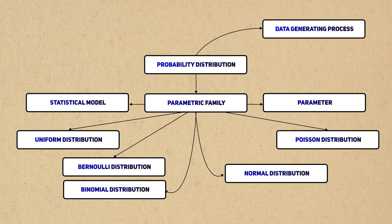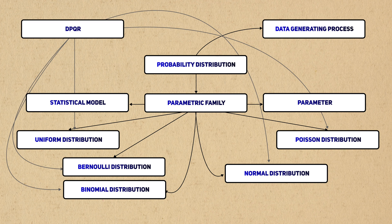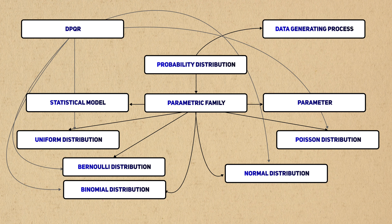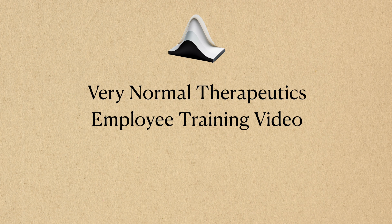R gives us four functions that allow us to use probability distributions of parametric families in code, which we call the DPQR functions. D is for density, P is for cumulative for some reason, Q is for quantile, and R is for random. To use these functions, you just need to figure out what name to use after these letters. This has been a very normal therapeutics training video on parametric families. Note that watching videos is not paid for under company time.